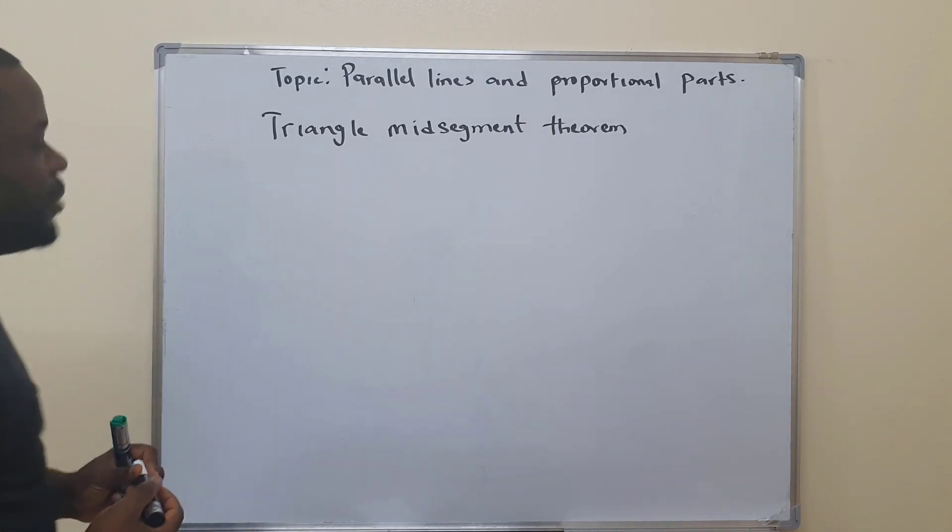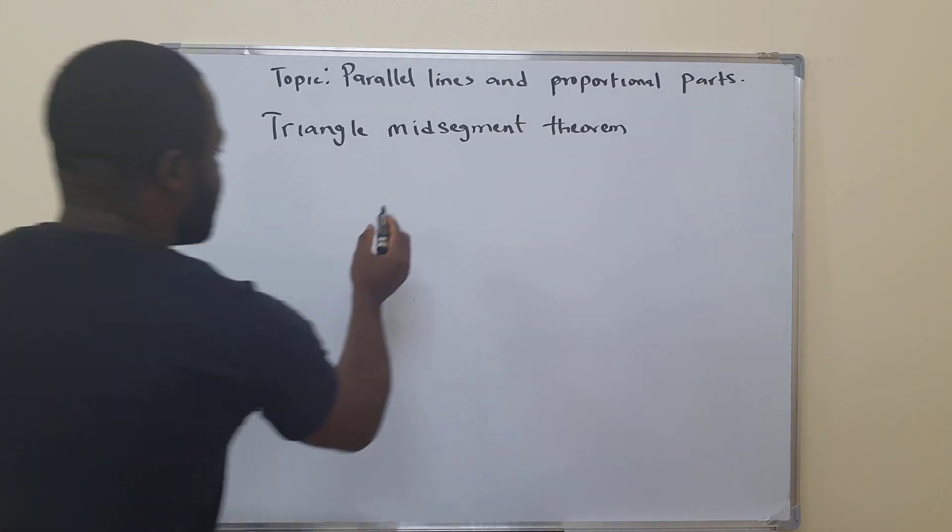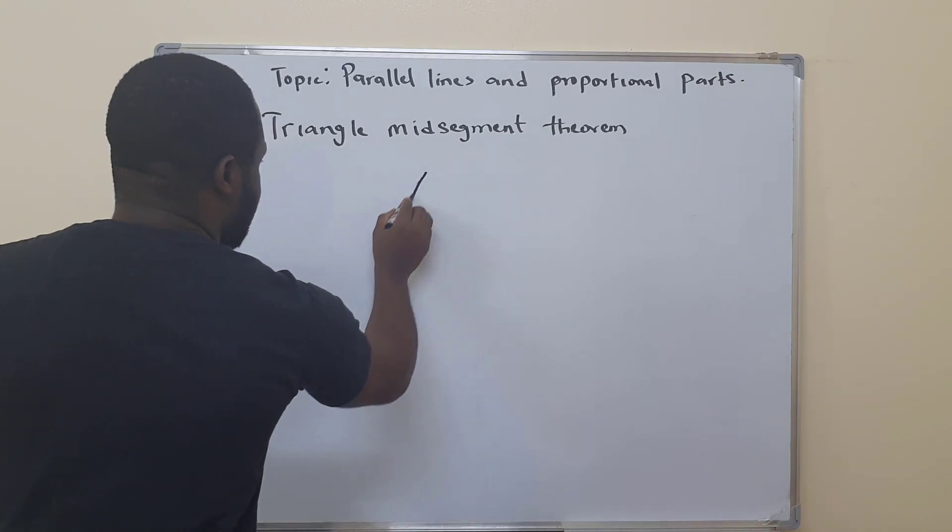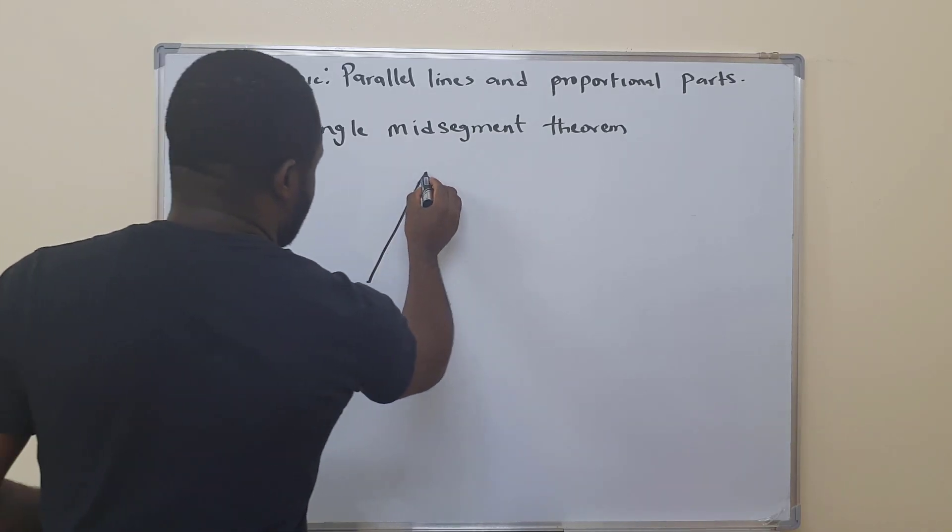The triangle midsegment theorem. This is what it entails. Triangle midsegment theorem says, let's do a triangle, let's have a triangle.